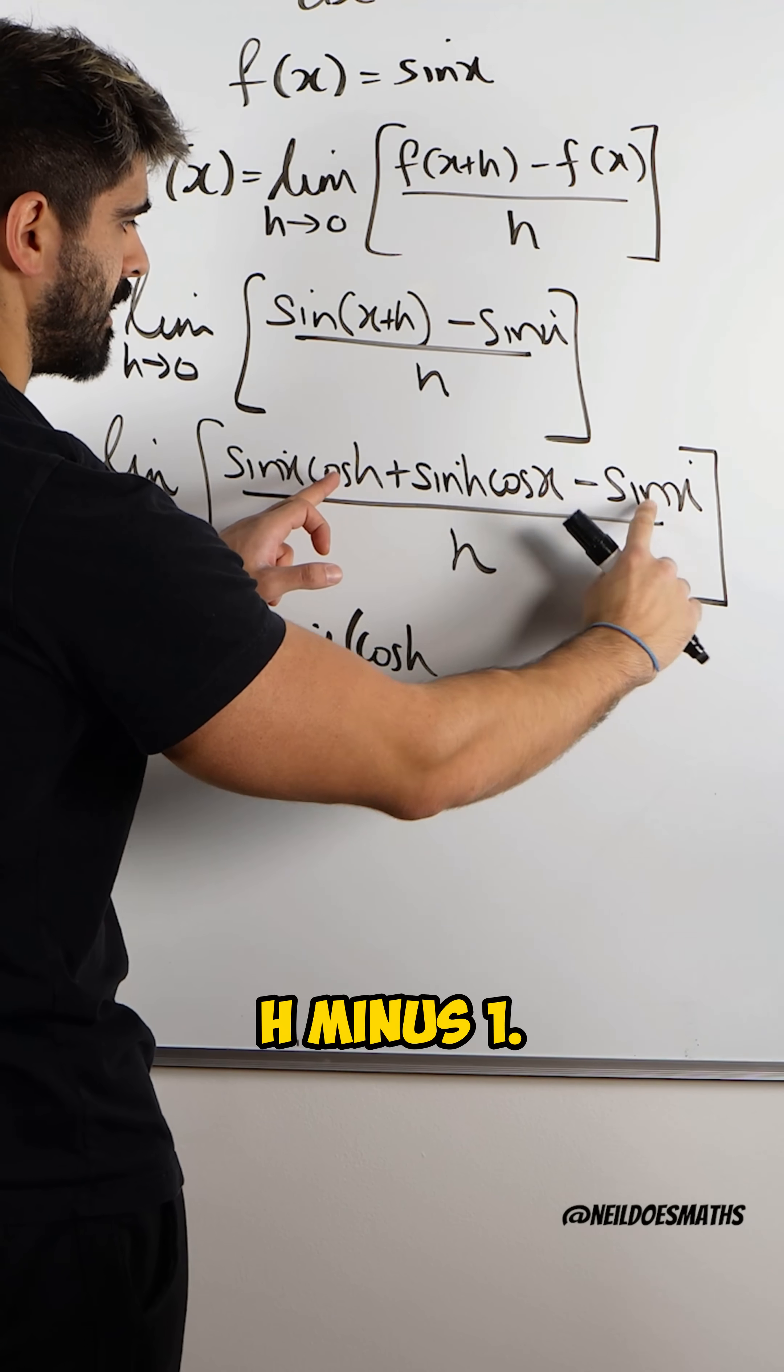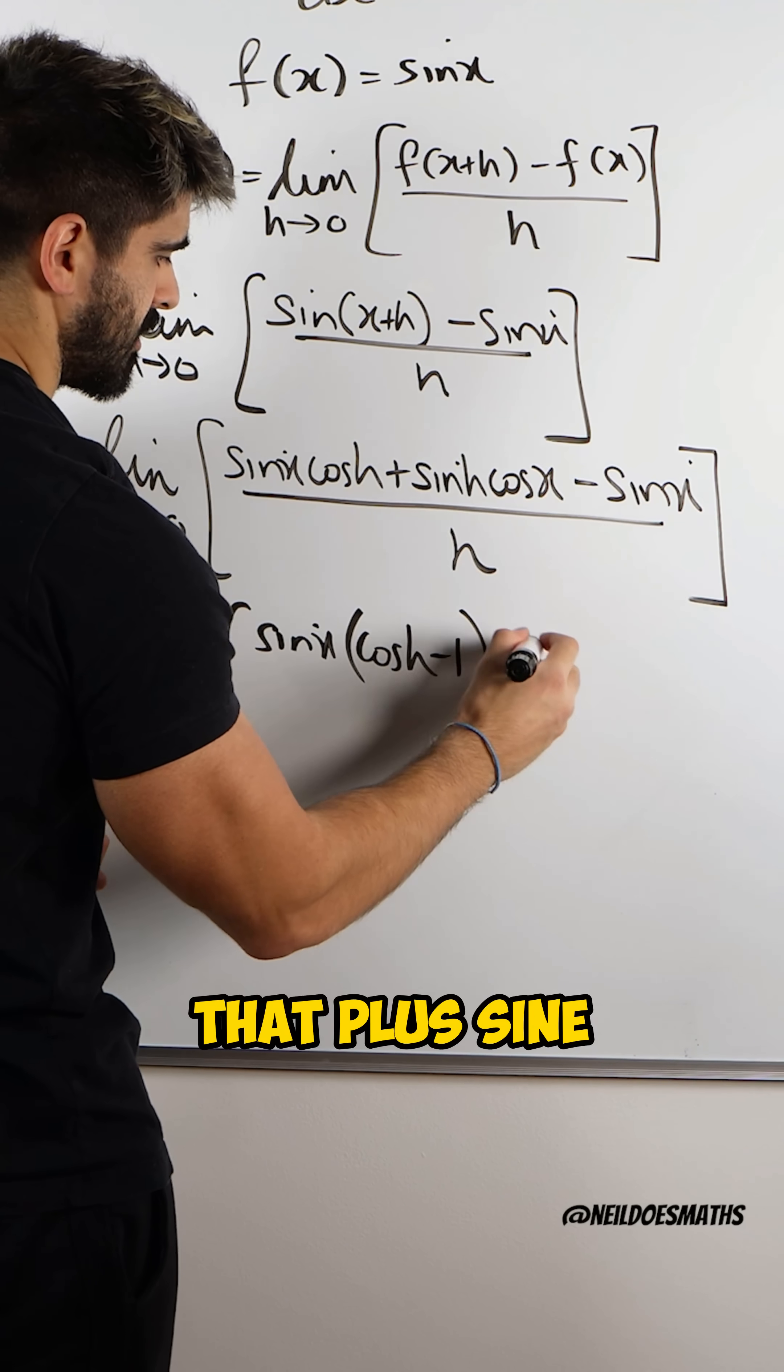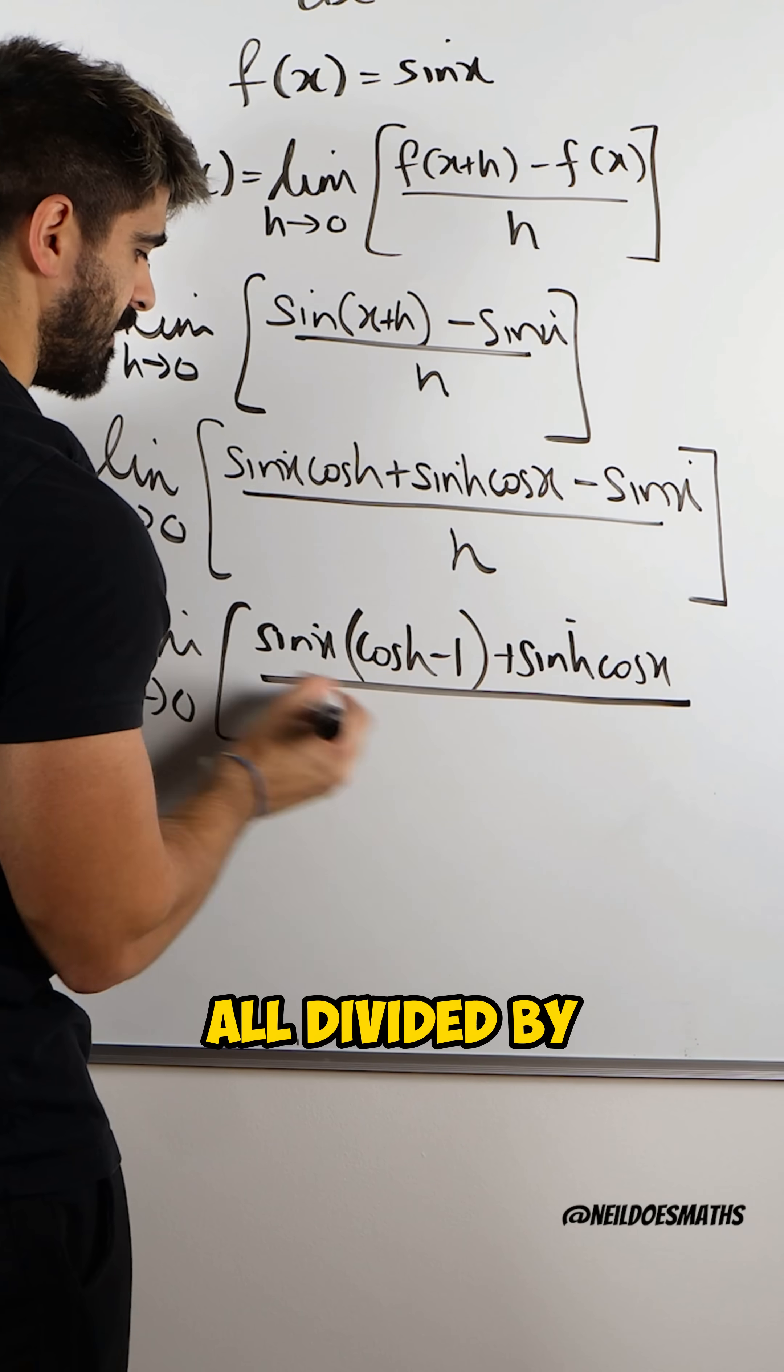So we factorize out sin(x). I would get cos(h) minus one. Then we have that plus sin(h)cos(x), all divided by h.